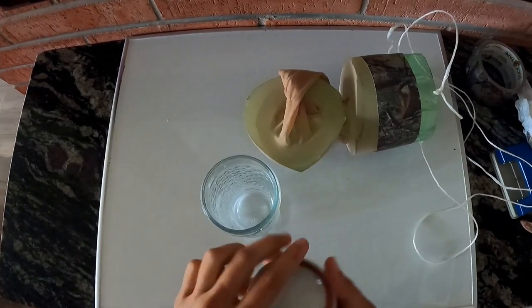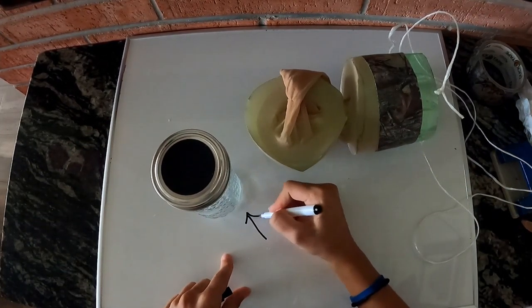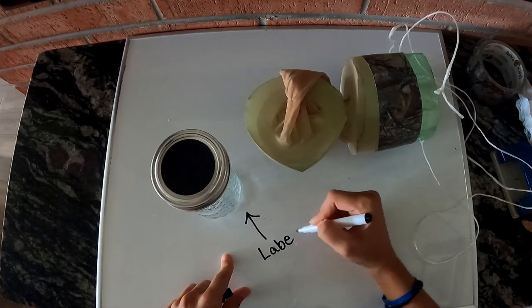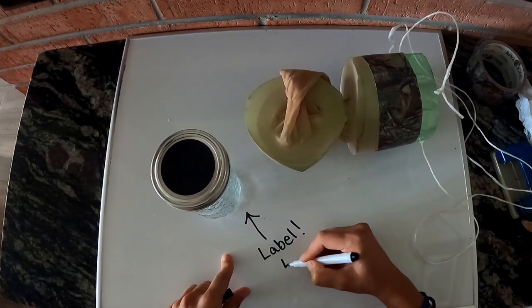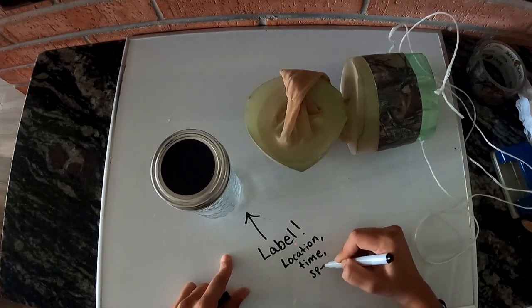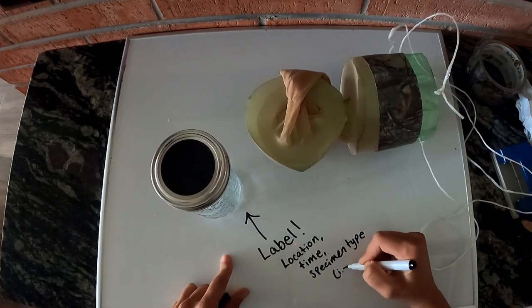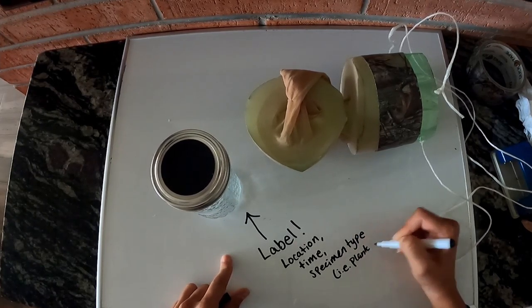Now prepare your sampling bottle by finding a clean resealable jar or bottle. Either write directly onto the container or place a piece of tape onto the outside when it is dry. When collecting samples, it is important to include information about the location, time, and any other notes that are important for later analysis, including what you're collecting.